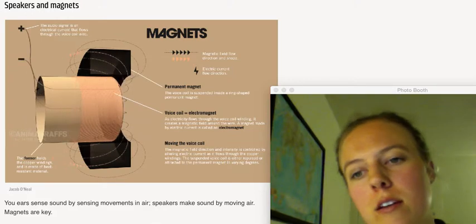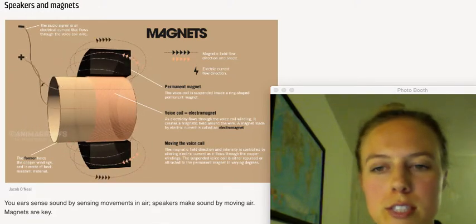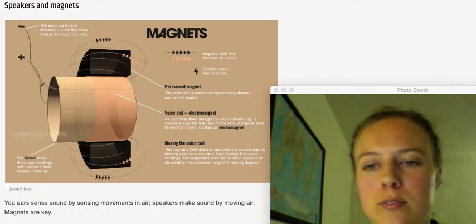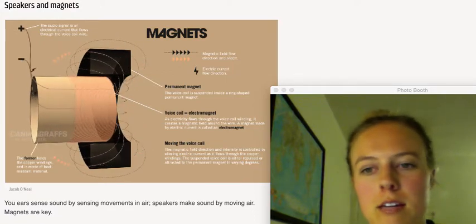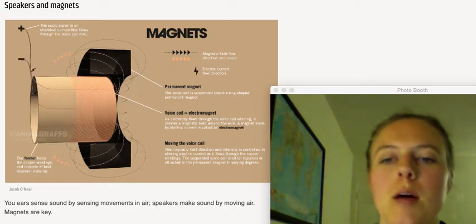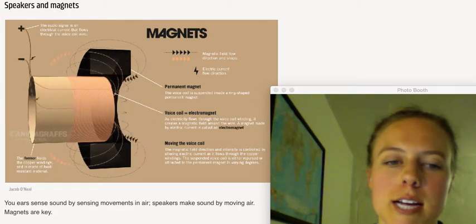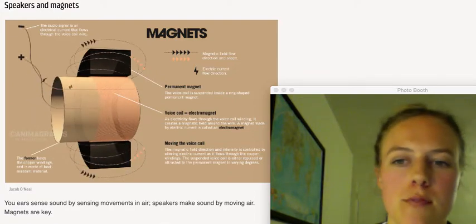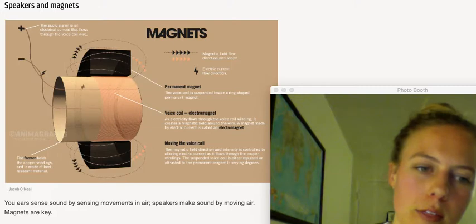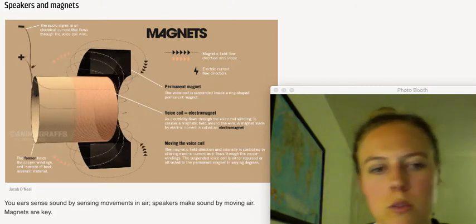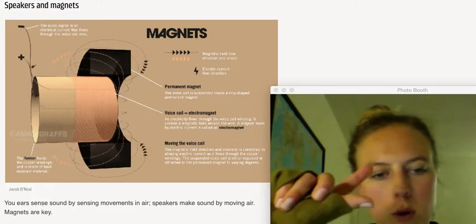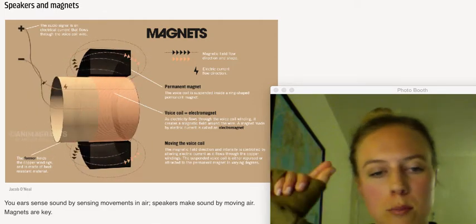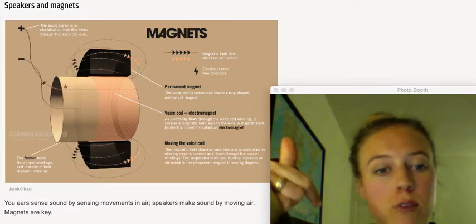So what the alternating current does is switch or flip what's called the polarity of the voice coil. So that might mean that if you look at this diagram on the right, it might start as the north pole on the right, south pole on the left, and then it might flip to the south pole on the right, north pole on the left. So the alternating current, flipping back and forth, is going to also switch the polarity, where the north and south poles are aligned, of the voice coil itself.